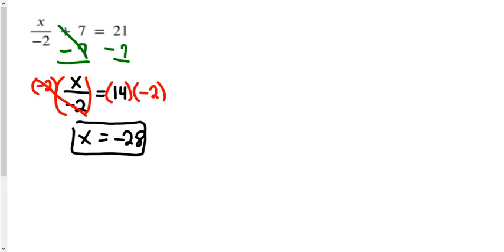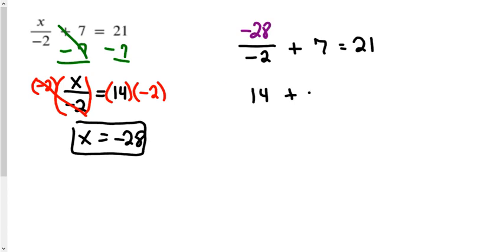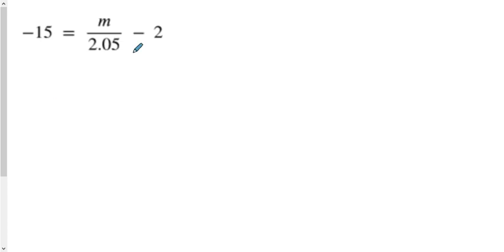Now we go check. You can see that negative 28 divided by negative 2 gives us 14, and 14 plus 7 is indeed 21, so we're correct. This problem has a few things that make it interesting — that's why it's in your notes.